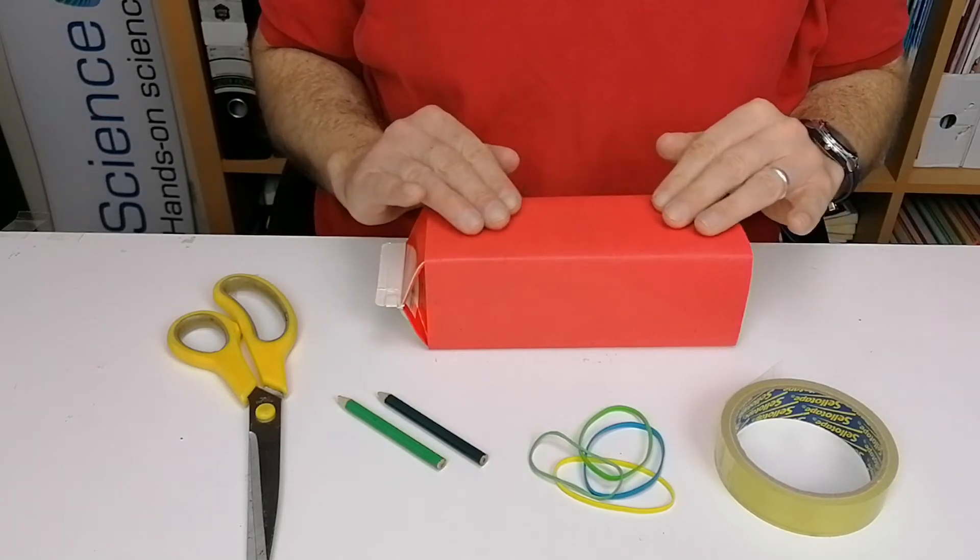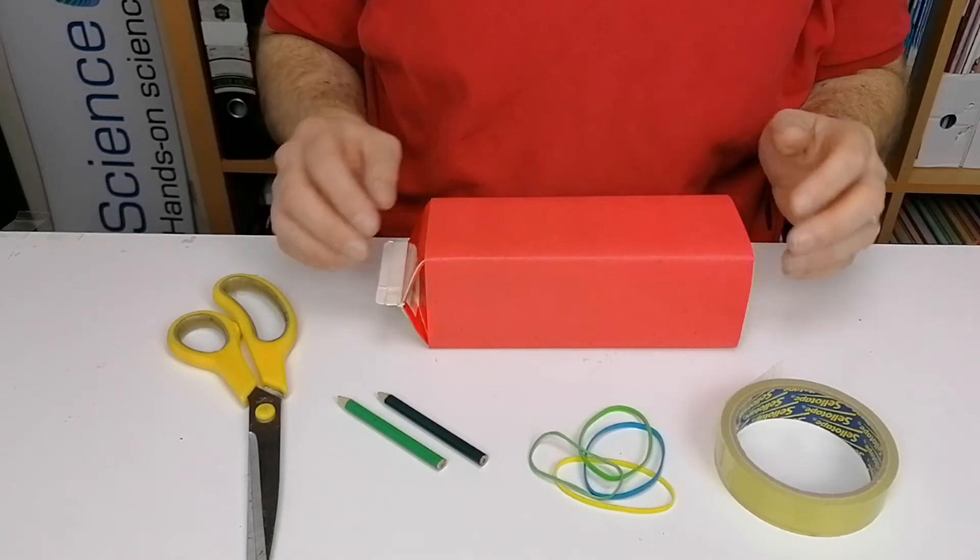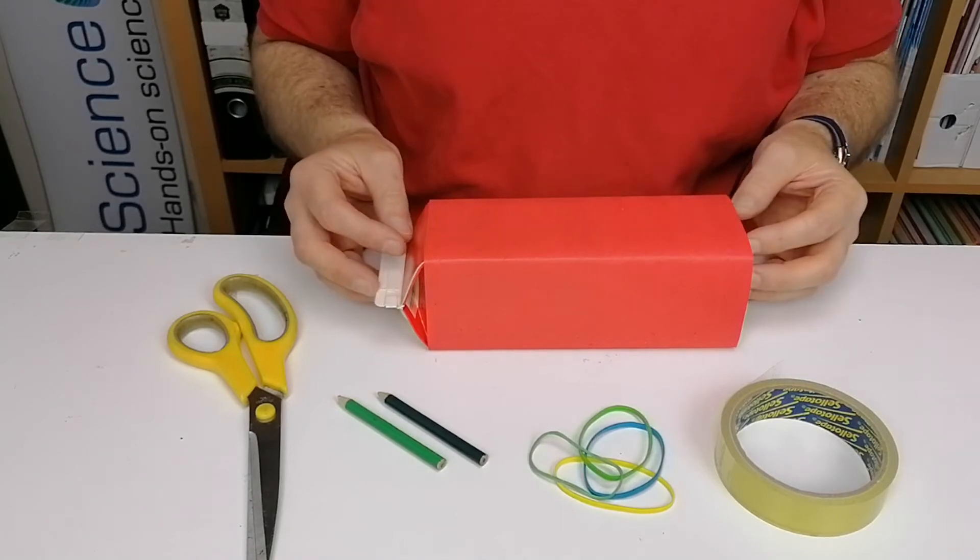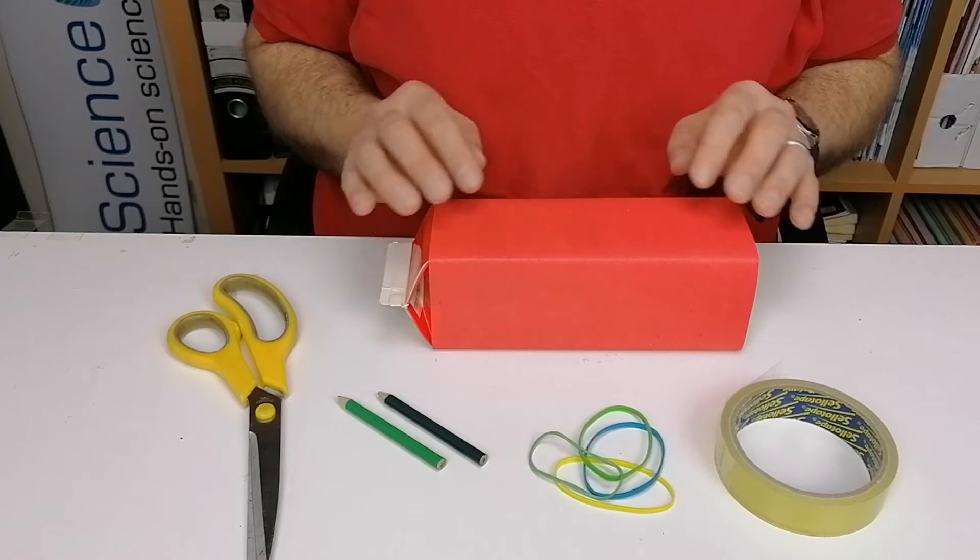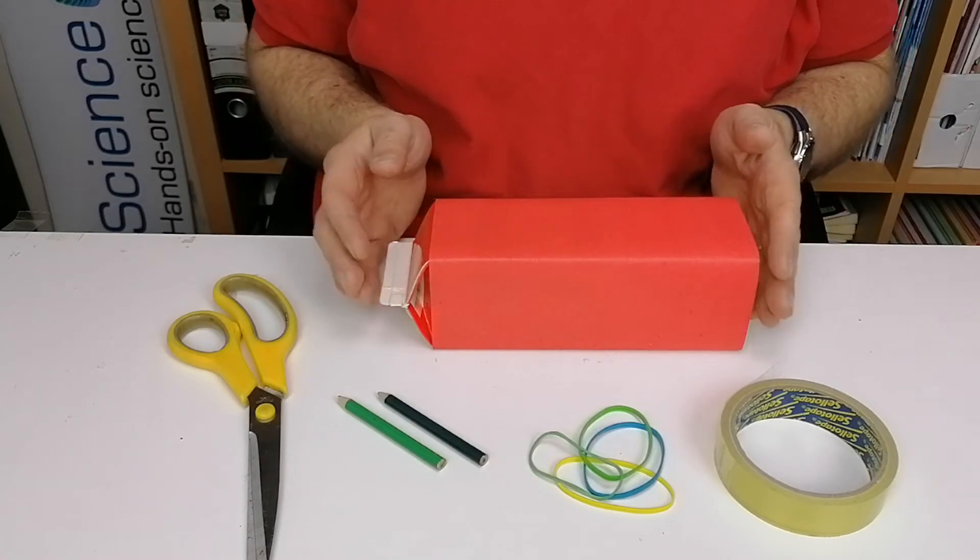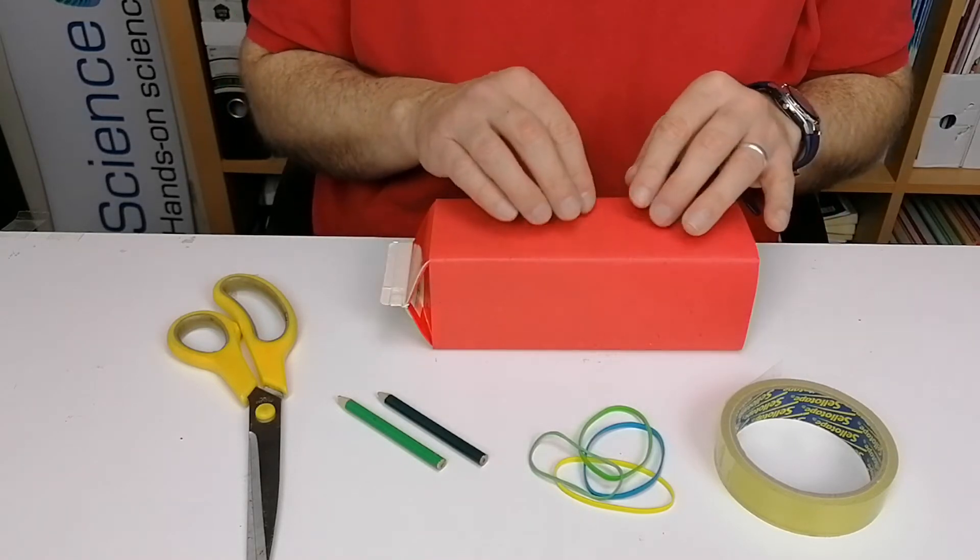So we have the juice carton here and what we're going to do is put the elastic bands around the carton in this direction. Now the thing about it is if we just put them all on in this direction, then they'd all have the same note.